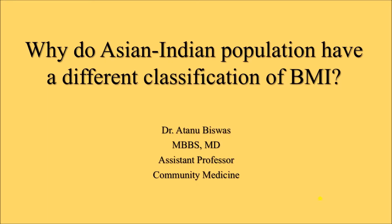Often during any kind of research work — thesis, dissertation, etc. — we have to assess the body weight of our subjects and determine whether they are obese or overweight. Undergraduate students posted in different families or project works from the department of community medicine also have to assess body weight and BMI to find out obesity or overweight in subjects. That is why we have different classifications of BMI, based on which we can say whether a person is overweight, normal weight, obese, etc.